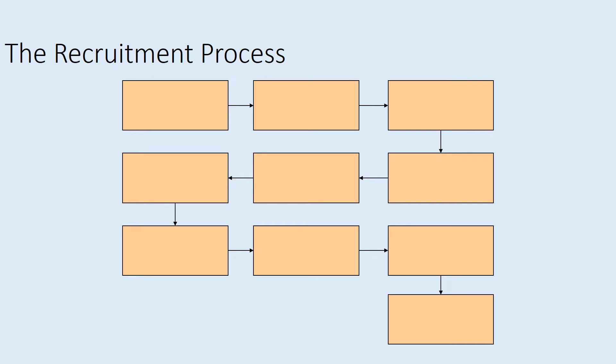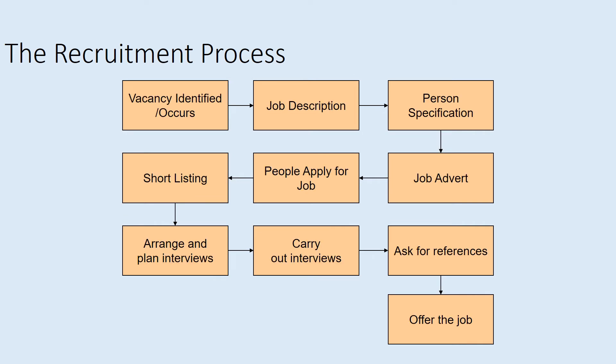The recruitment process goes as follows: identify a vacancy; write a job description; write a person's specification; create a job advert; receive applications; shortlist the most suitable candidates; arrange and plan interviews; carry out the interviews; ask for references to verify what candidates have said; then make a job offer. If you didn't have this in the correct order, write it out correctly and tick off what you got right.